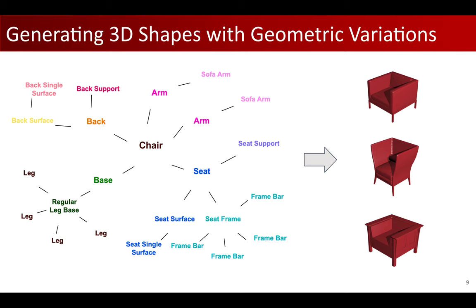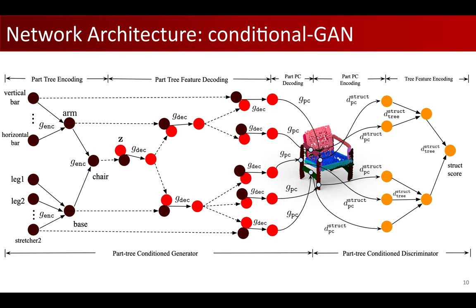Our task of PT2PC is to generate multiple 3D shape geometry that satisfies the symbolic part tree condition. We propose a novel conditional GAN framework to tackle this task.